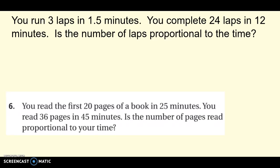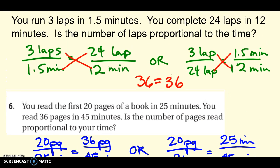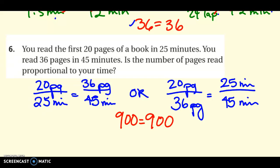You've got two problems here — set them up and then check your cross products to see if they're proportional. For the first one, most people will do it with laps over minutes, but you could also do laps, laps, minutes, minutes. Check your cross products — they are equal, so it is proportional. For the second one, most people will do pages per minute. If you check the cross products, they are also proportional.